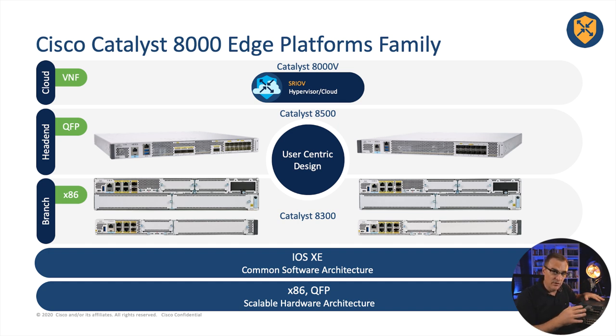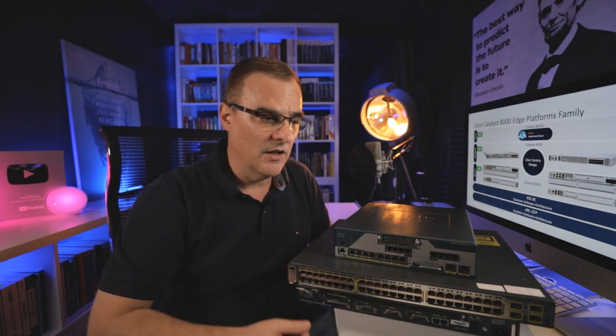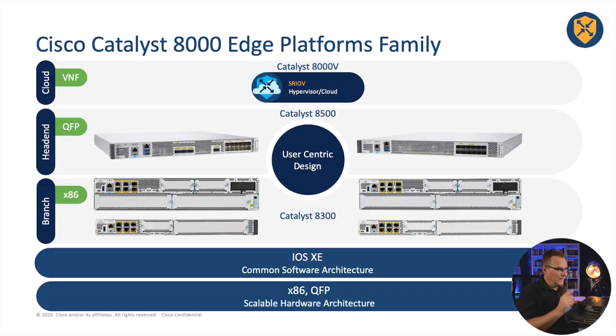So the Cisco Catalyst 8000 edge platforms are not called a router even though they have routing functionality. They are called platforms because they support many kinds of functions. Rather than just being pure routers, we now have edge devices or edge platforms. They support software-defined WAN, multiple connection options — MPLS, traditional internet connections like ADSL or leased line or cable, and also cellular technologies such as 4G or 5G. This device can act in autonomous mode or in SD-WAN mode controlled by a central controller.